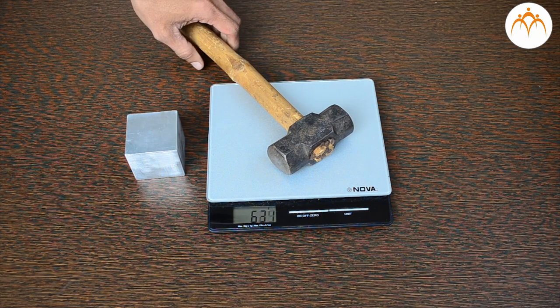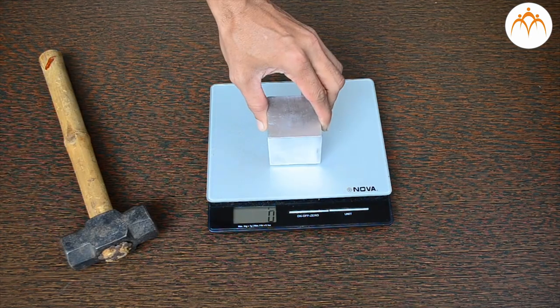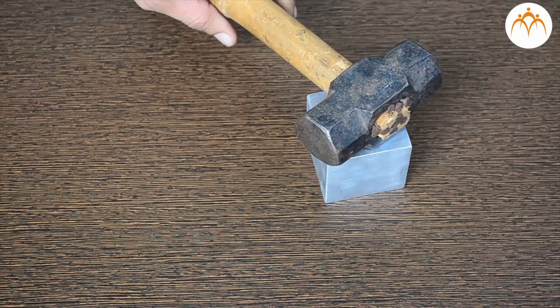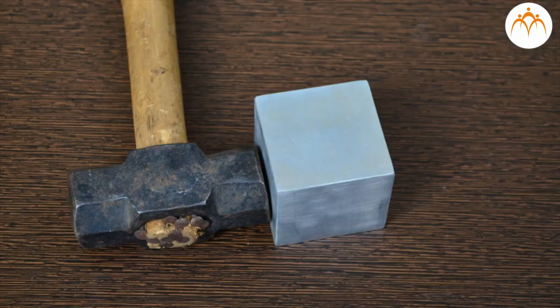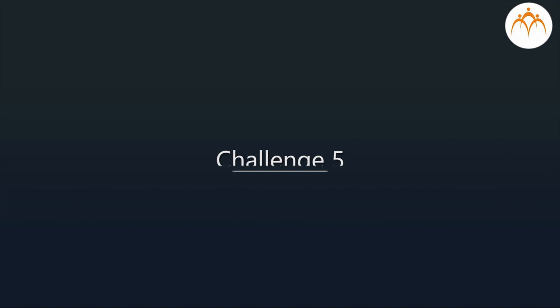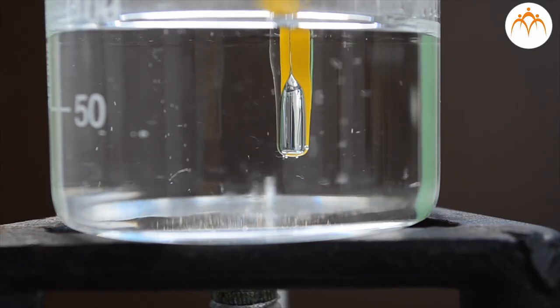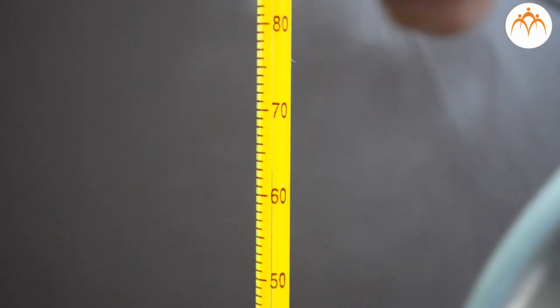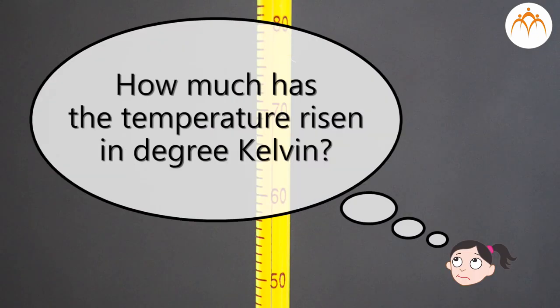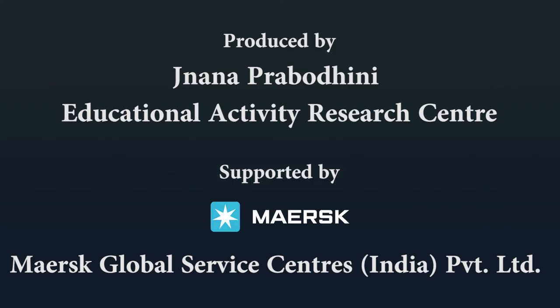Challenge: A hammer's temperature is higher than that of an aluminium block. When the two are placed in contact, which way will heat energy flow — from the hammer to the aluminium, or from the aluminium to the hammer? Also, when water is heated and its temperature rises by 10 degrees Celsius, by how much has it increased in degrees Kelvin?